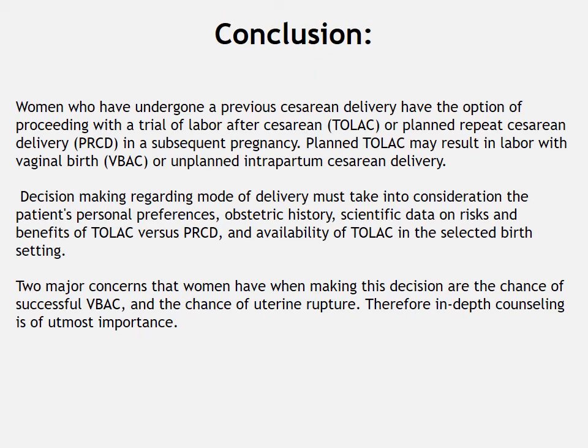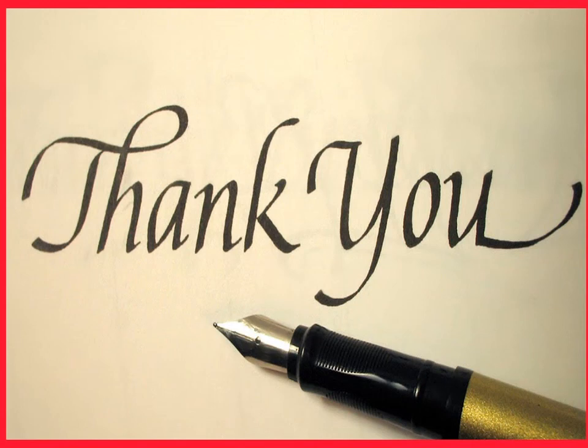In conclusion, women who have undergone a previous caesarean delivery have the option of proceeding with trial of labor after caesarean or planned repeat caesarean delivery in a subsequent pregnancy. Planned trial of labor after caesarean may result in vaginal birth or unplanned intrapartum caesarean delivery. Decision making must take into consideration the patient's personal preference, obstetric history, scientific data on risks and benefits of trial of labor versus planned repeat caesarean, and availability of VBAC in a selected birth setting. The two major concerns are the chances of successful VBAC and chances of uterine rupture; therefore, in-depth counseling is of utmost importance.